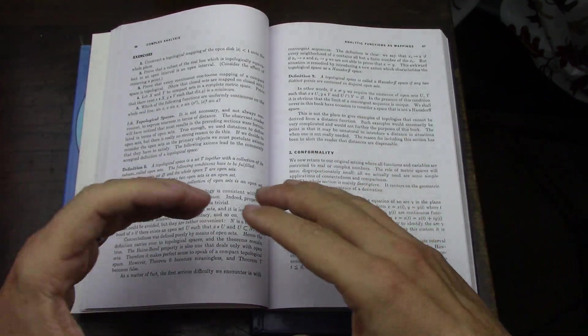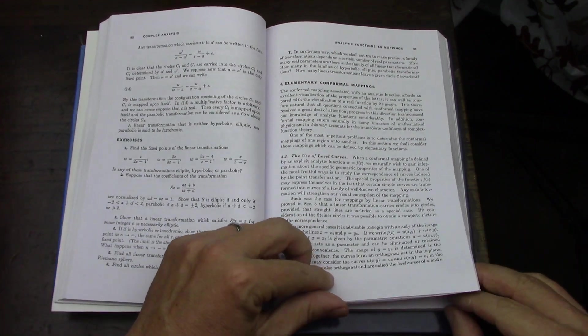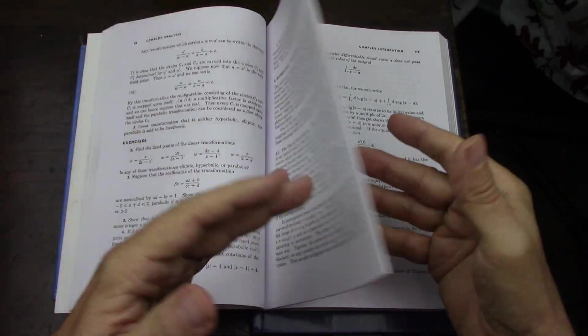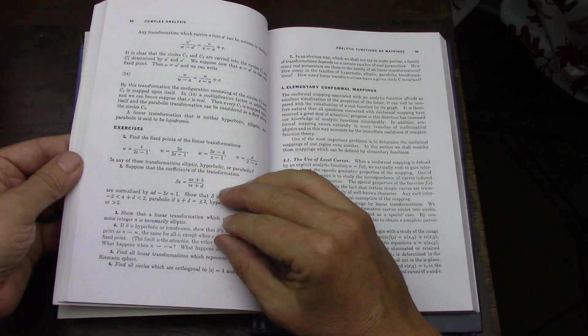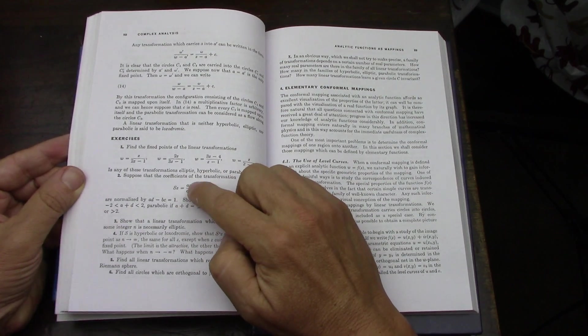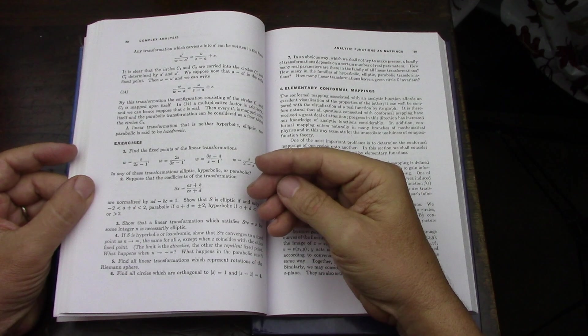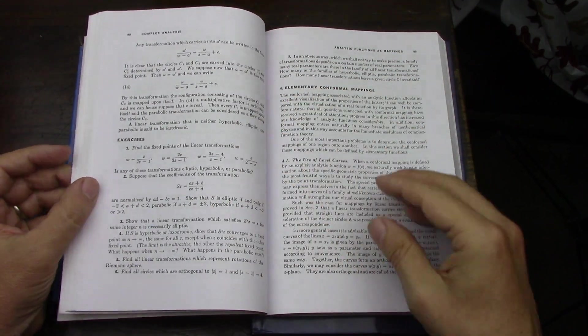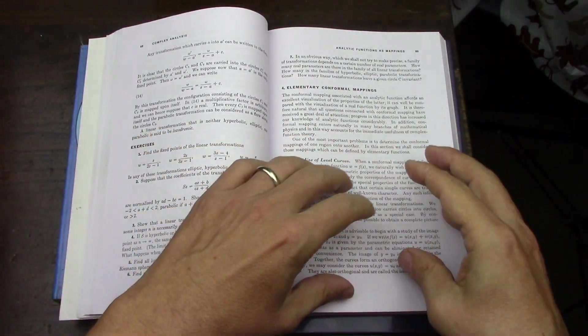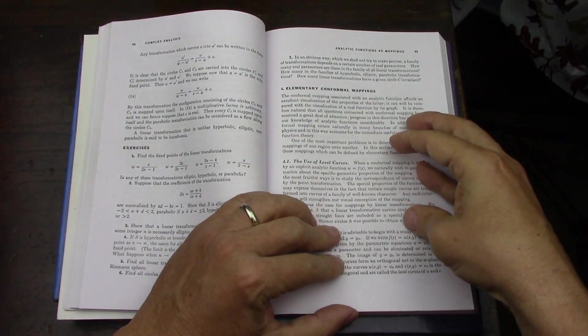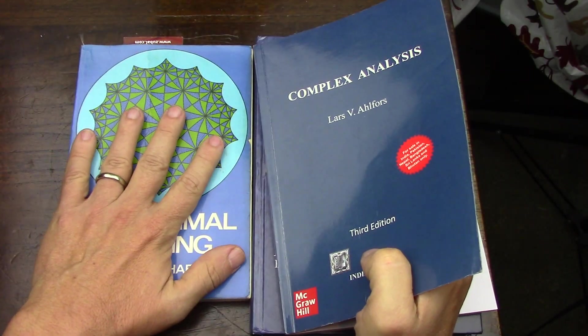One thing that Ahlfors does that Saff and Snyder does not do is it hits you with bilinear transformations, otherwise known as Möbius transformations, otherwise known as conformal mappings. Really, in my case, when I read Saff and Snyder, I had to figure out near the end—chapter seven, conformal mapping—oh, this is what this whole thing is about. And this is why I went and got me this book. I was like, well, if all you guys are talking about is conformal mapping, why don't I just do a whole book on conformal mapping? And sure enough, that's what I'm doing right now.